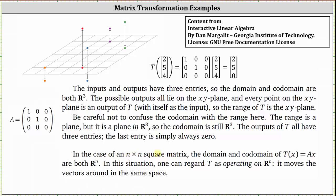In the case of an n by n square matrix, the domain and co-domain of t of x equals ax are both Rn. In this situation, we can regard t as operating on Rn, since it moves the vectors around in the same space.